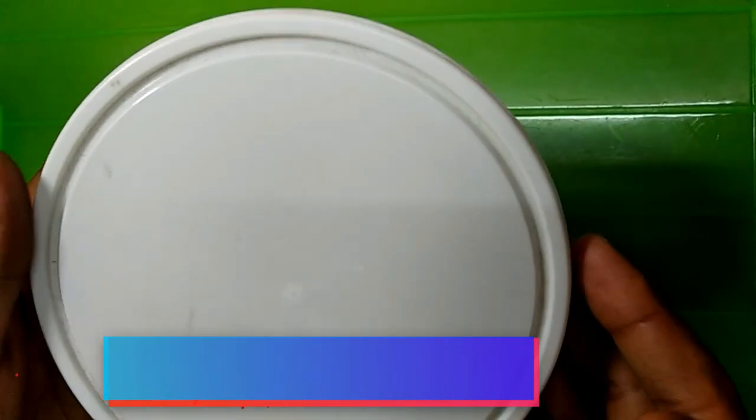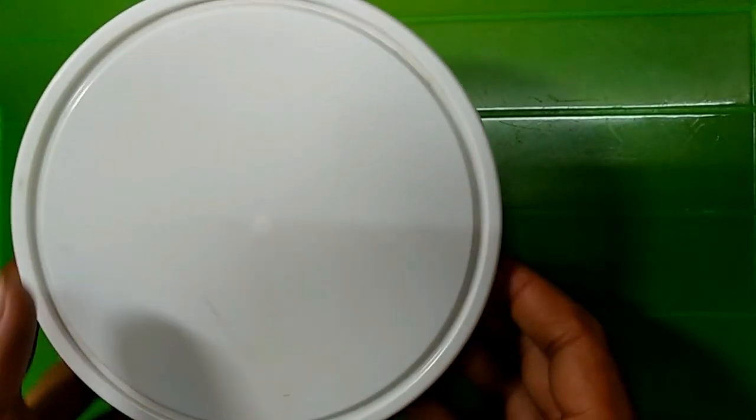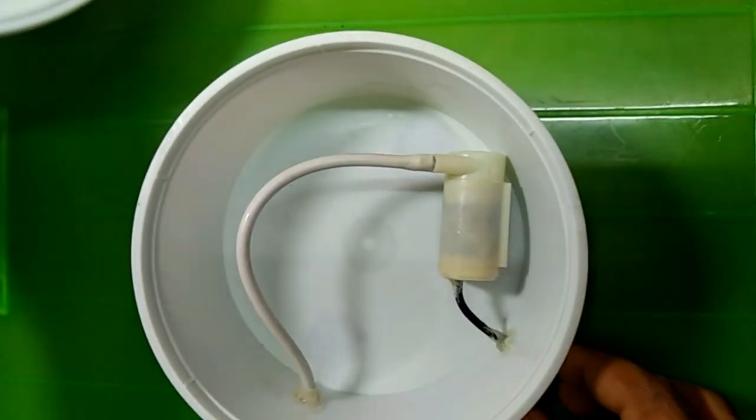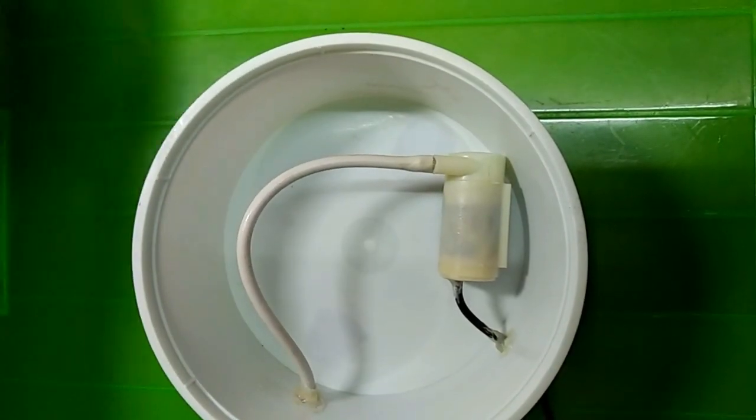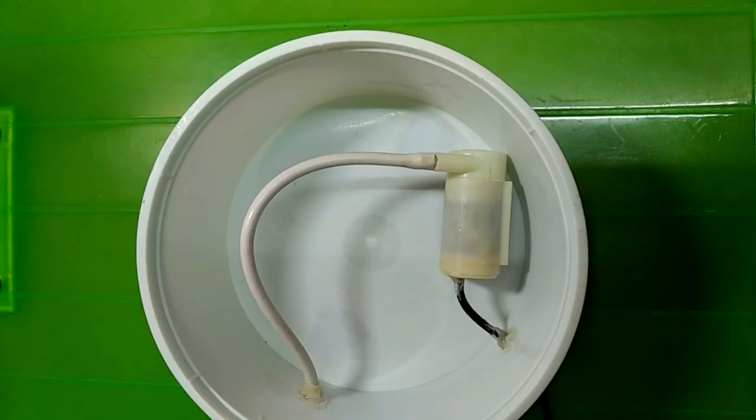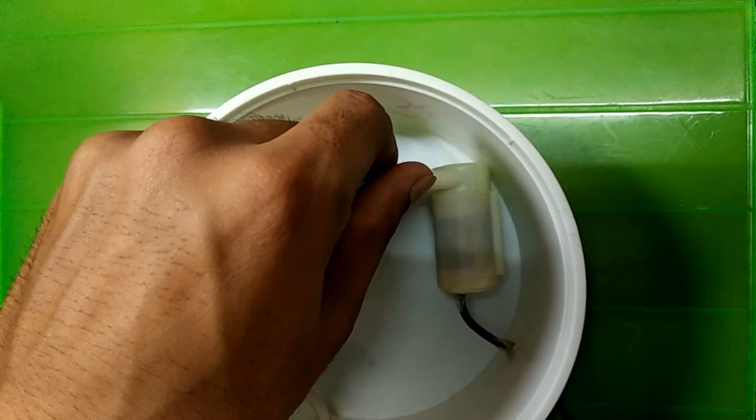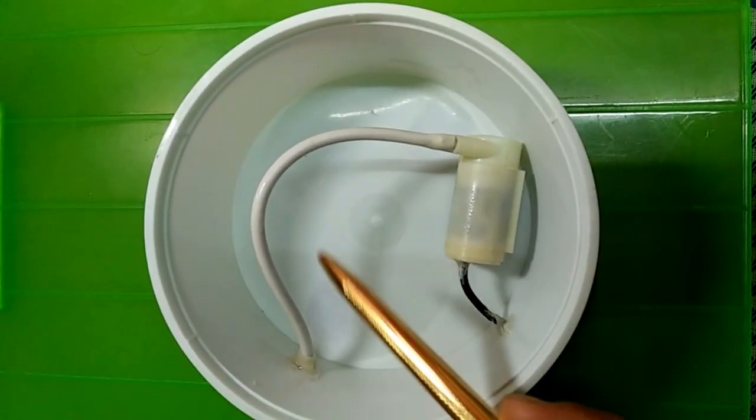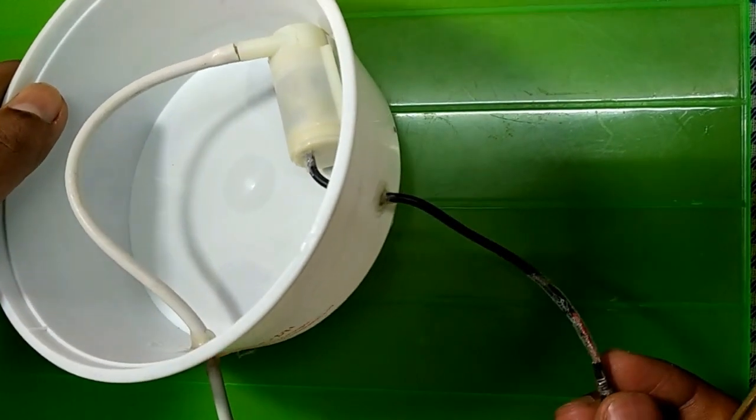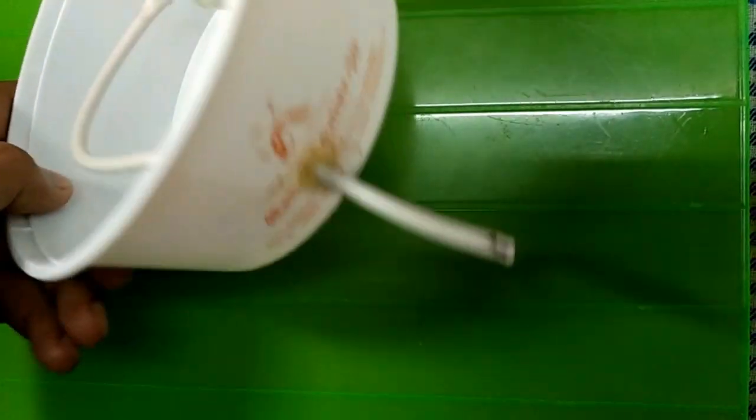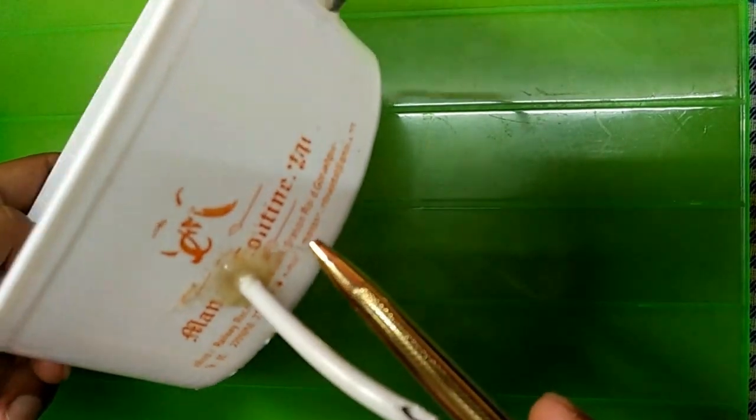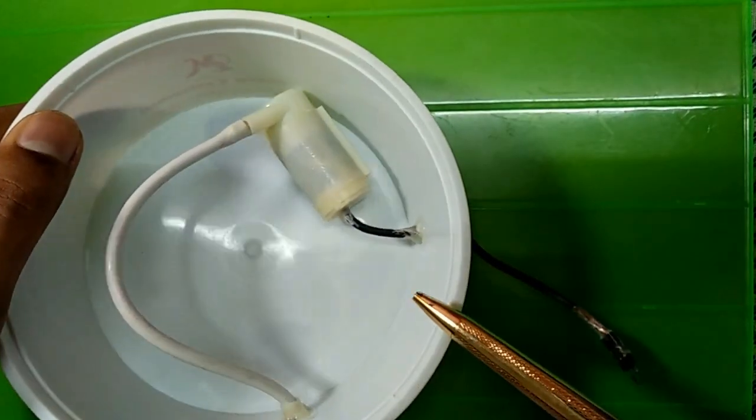Now coming to the water tank. This I have made from a sweet box. It contains a pump motor. A pipe is coming out of it. You can see the pipe coming out. The water comes out from here. This is the power cord. I have sealed it both using the glue gun so that there is no leakage of water.